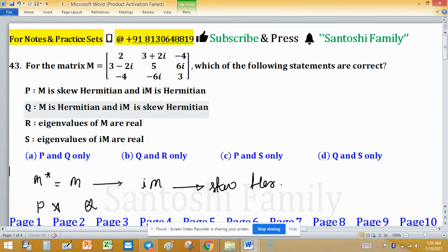Statement Q says M is Hermitian and iM is skew Hermitian. As I already told you, after multiplying with iota, Hermitian matrix transfers into skew Hermitian.